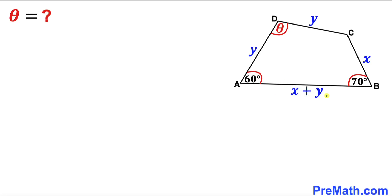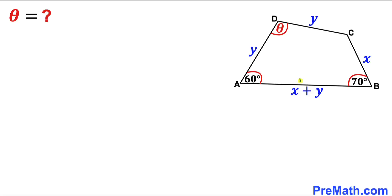Welcome to pre-math. In this video we have quadrilateral ABCD such that angle DAB is 60 degrees, angle ABC is 70 degrees, angle ADC is theta, side length AD is y units, side length DC is y units, side length BC is x units, and side length AB is x plus y units — the sum of x and y.